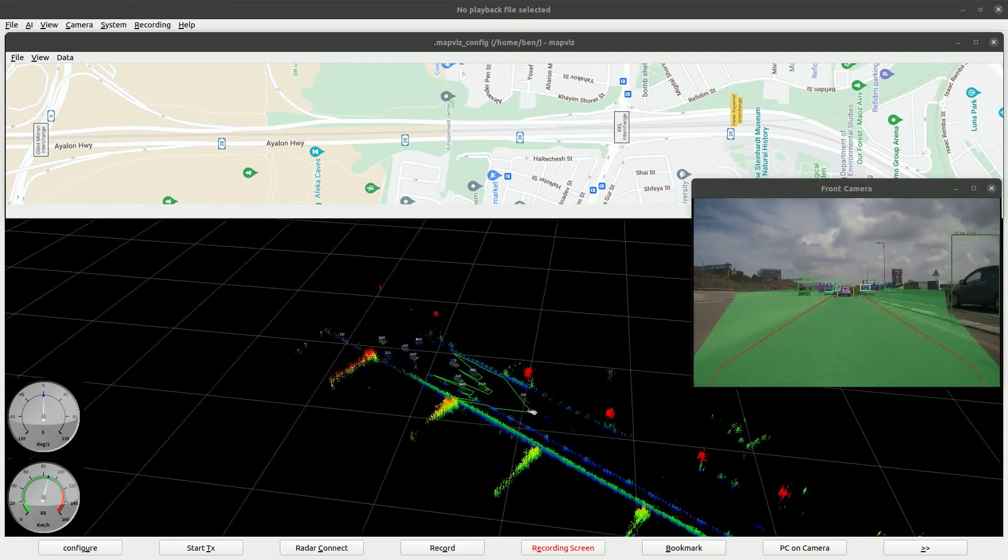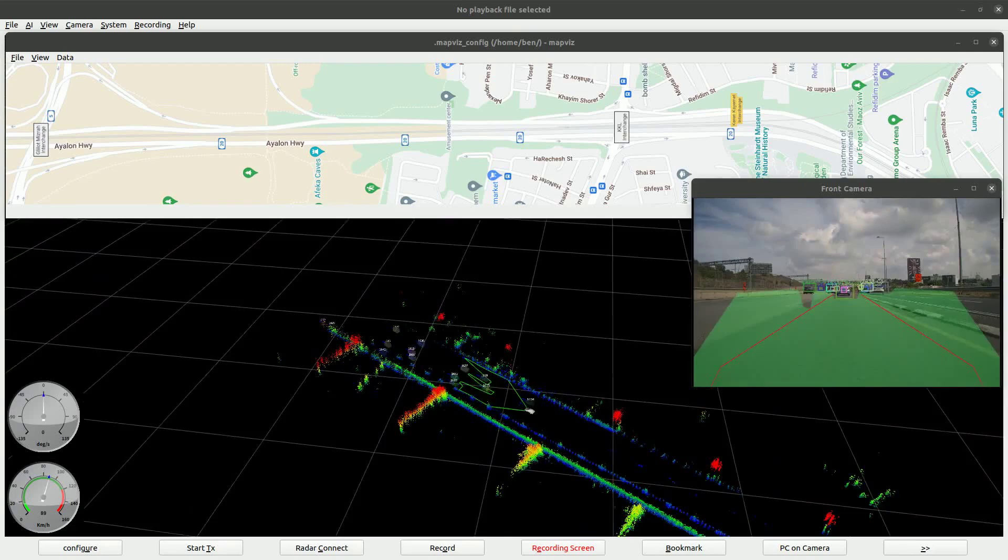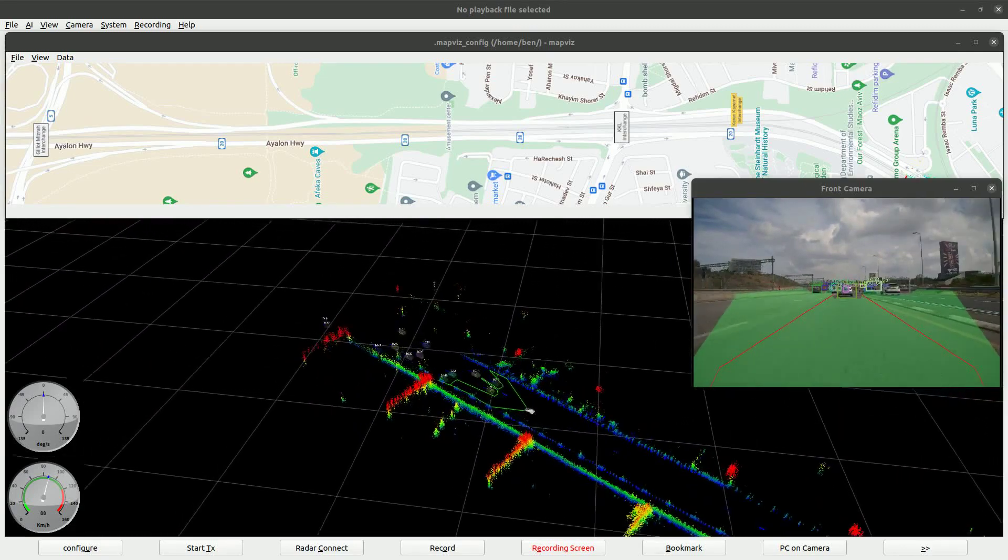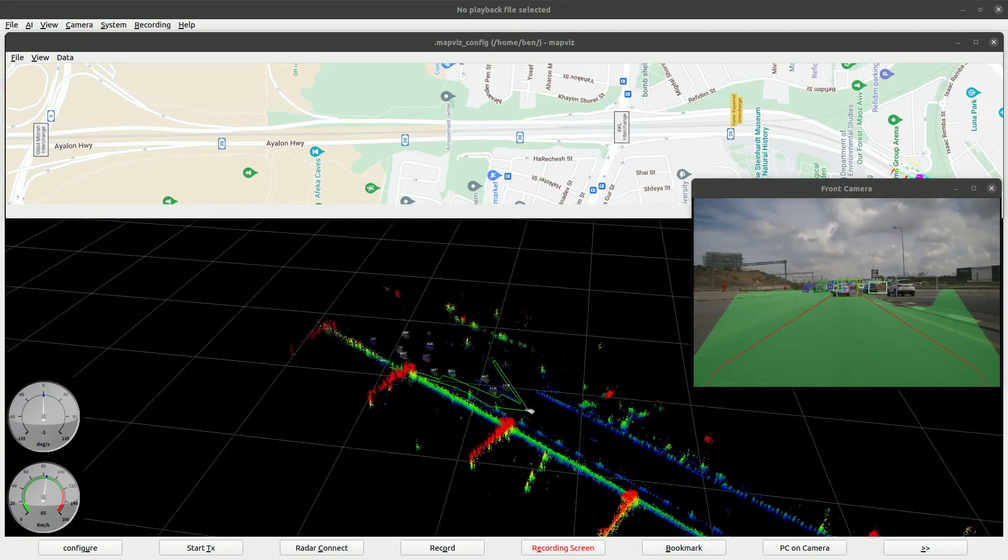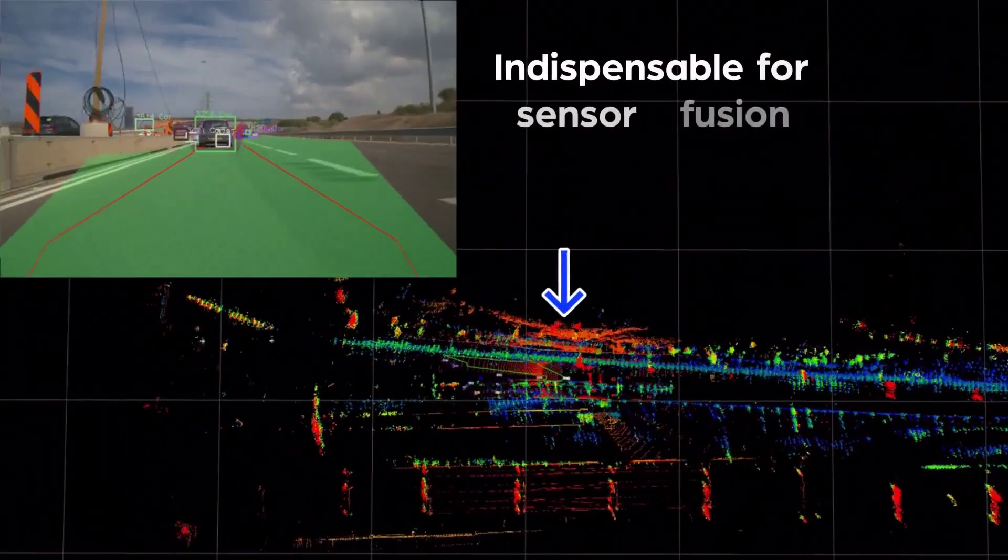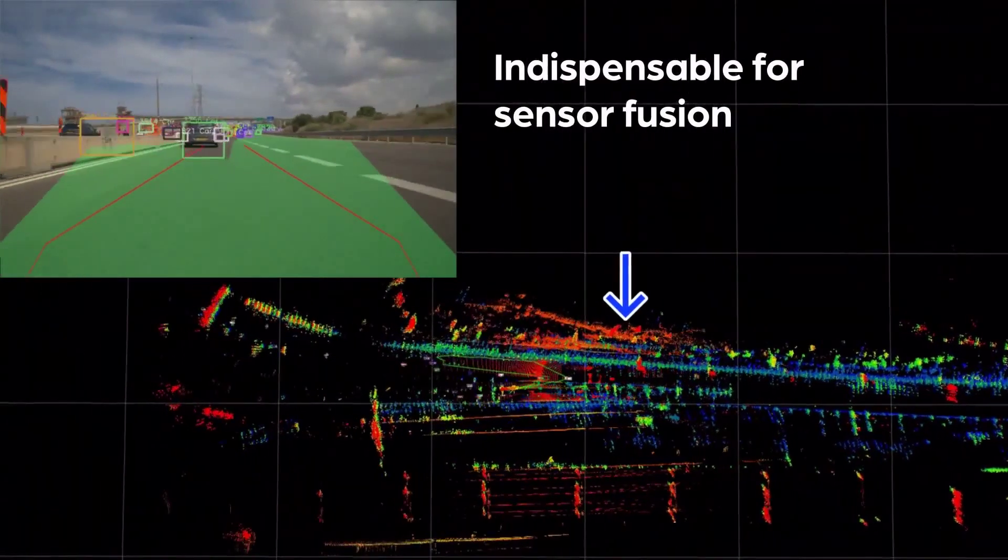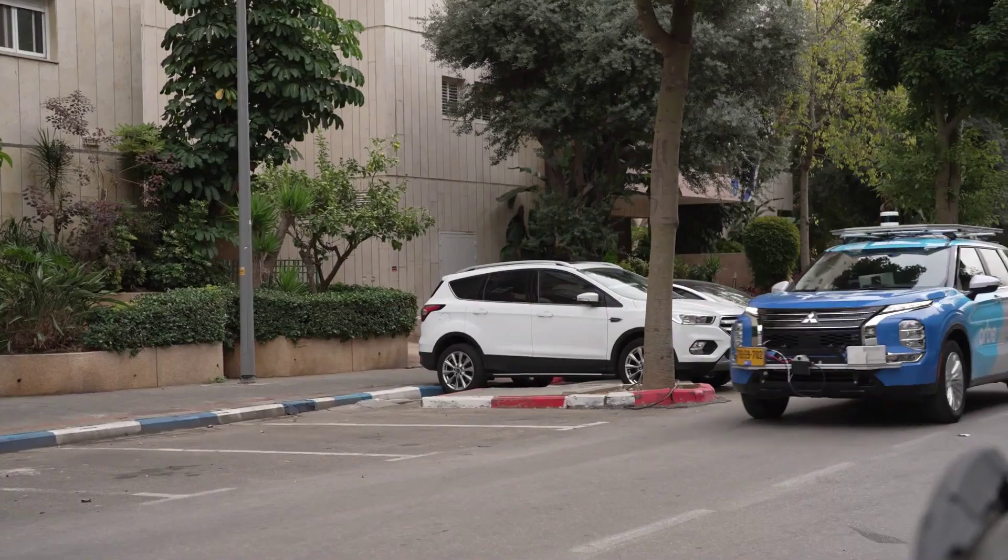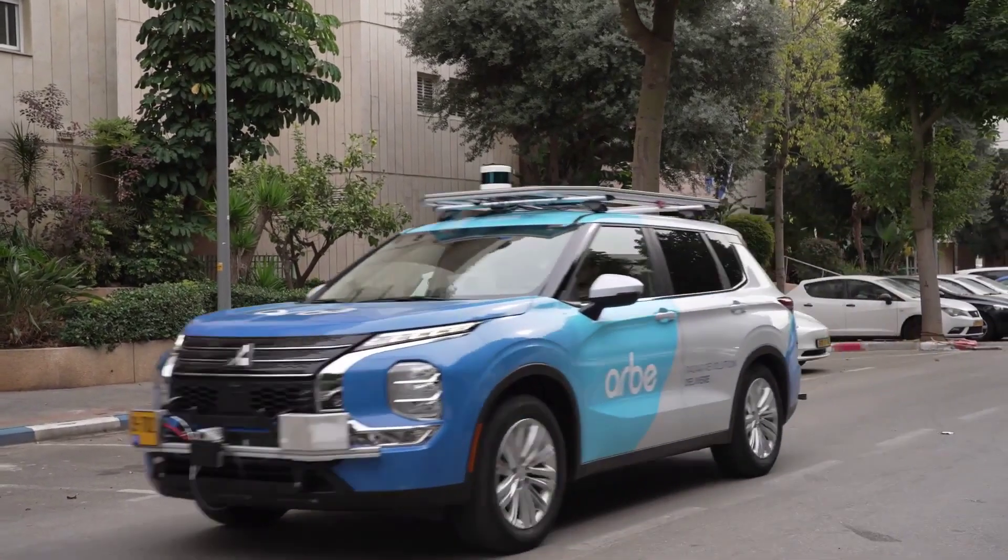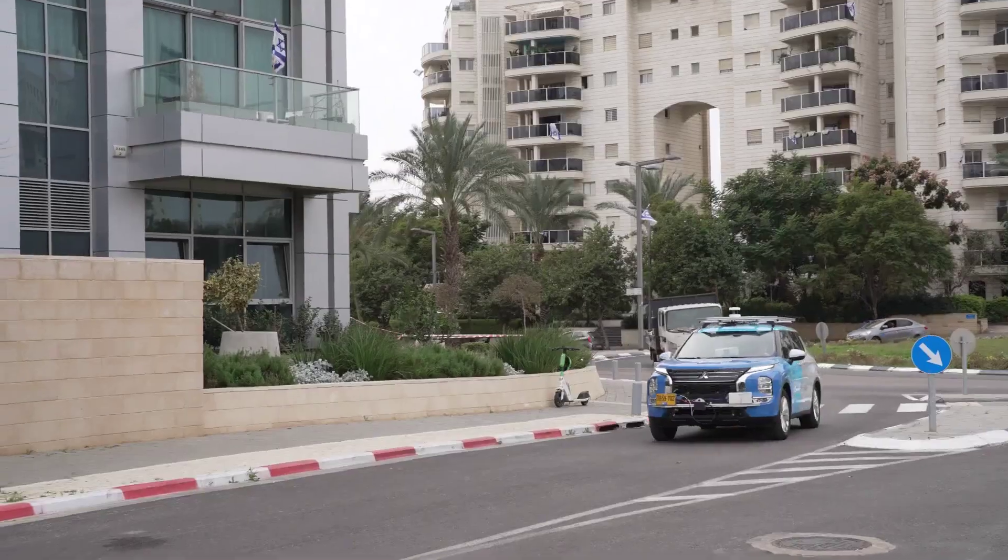Arbe's work with Sensrad has also been notable. Since it's a leading Tier 1 radar supplier in Sweden, Sensrad has been delivering its first radar series powered by Arbe's chipset, marking a major step in the commercialization of radar solutions for defense and smart infrastructure projects.